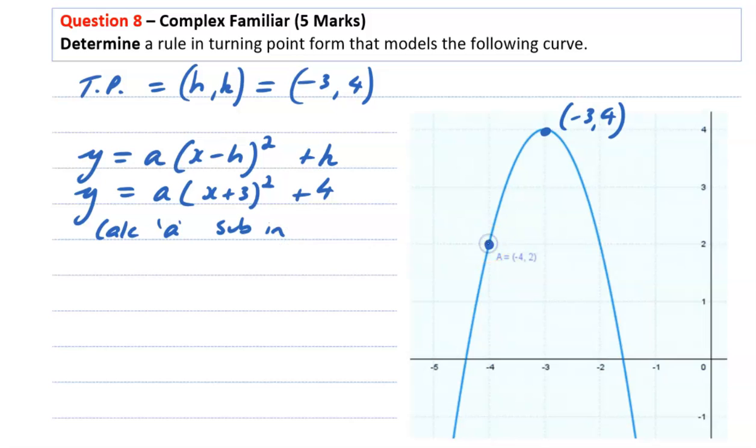This point here has been given, which is negative 4 comma 2. So we sub that in, we have our a, sub our negative 4 for x.